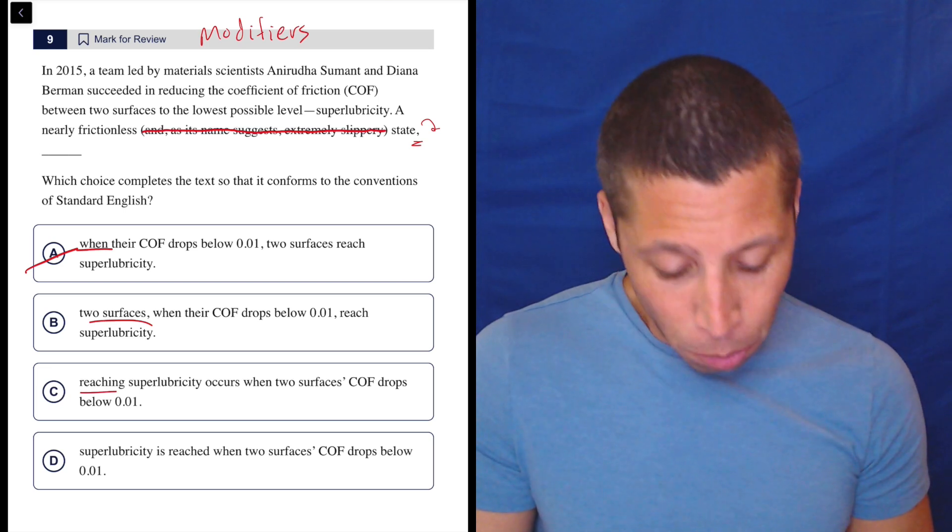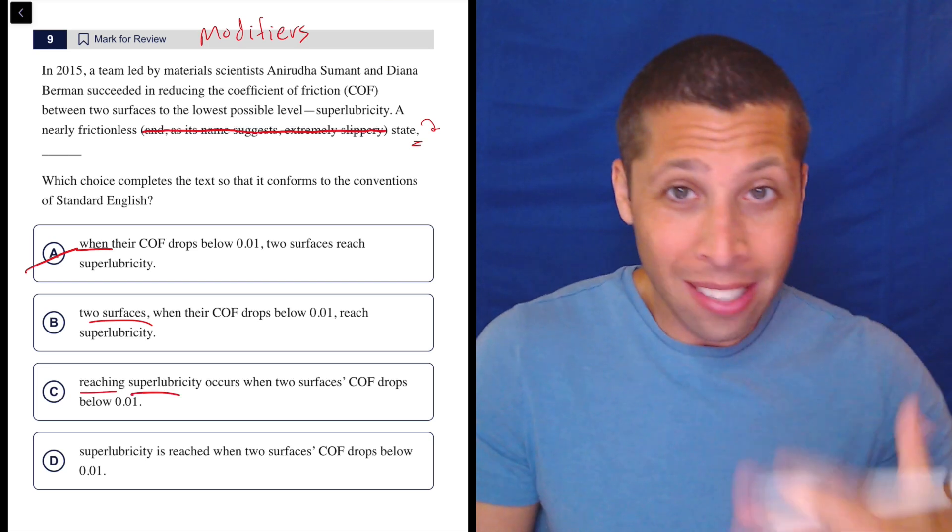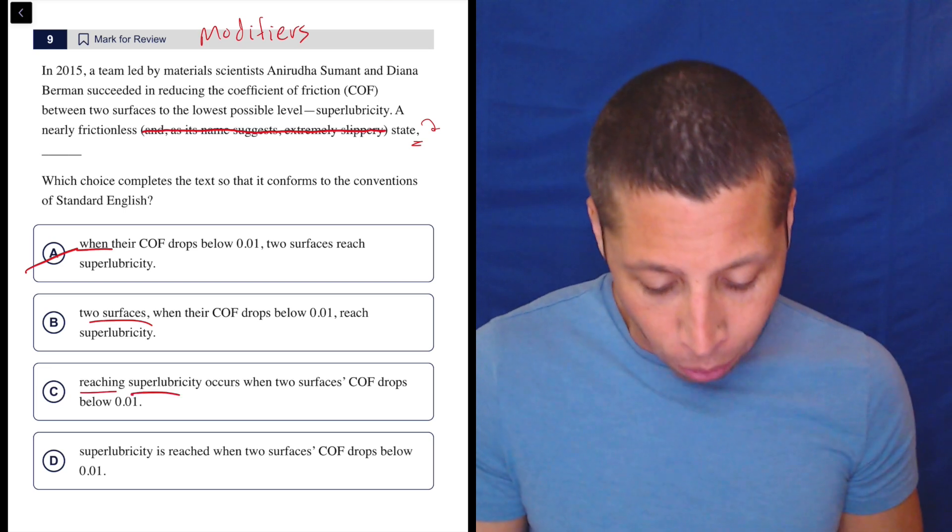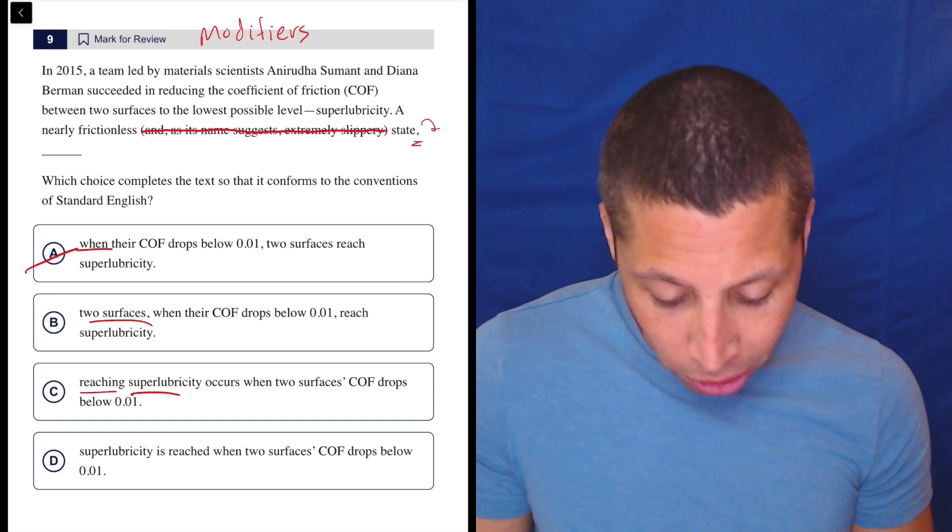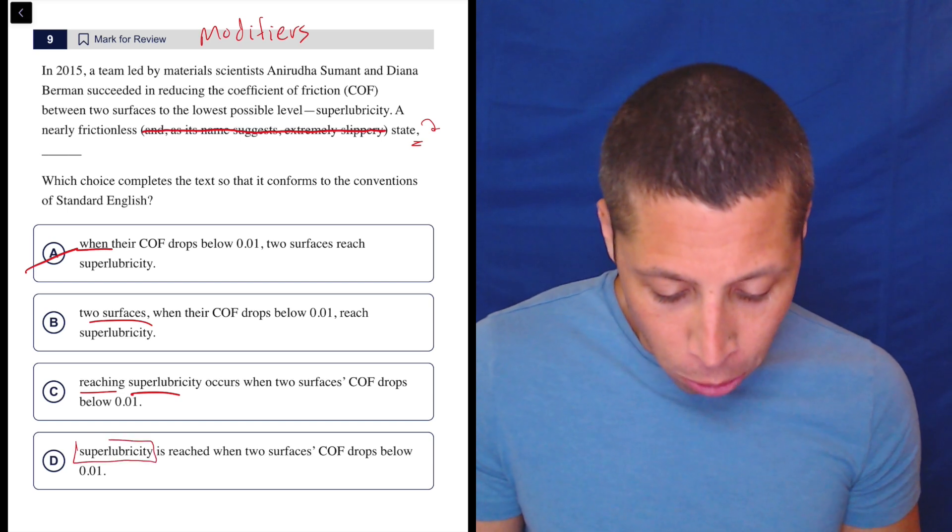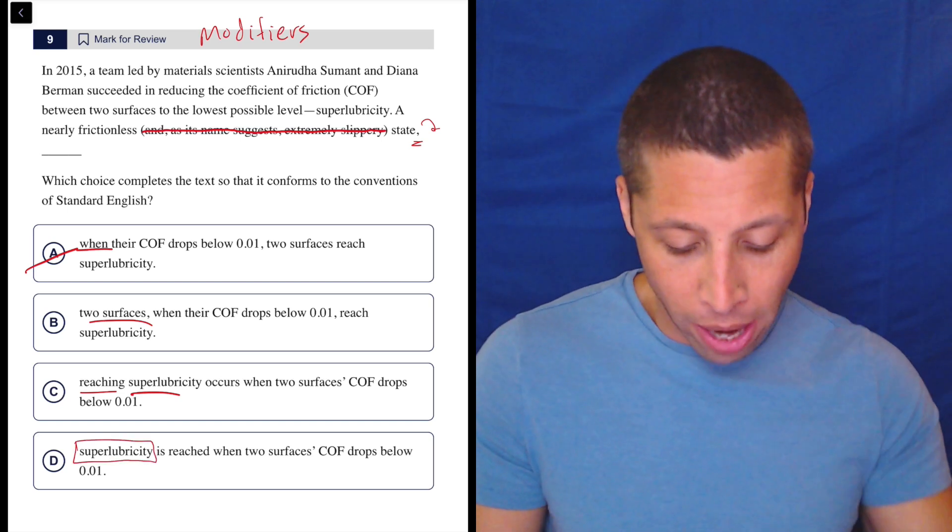Reaching superlubricity. Well, reaching isn't a state. It's a verb. We want this to be a noun. What is the nearly frictionless state? Superlubricity. That seems right.